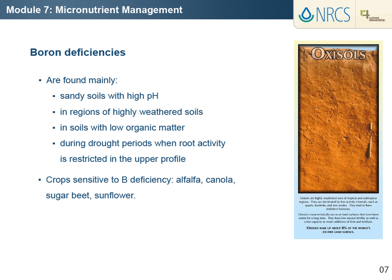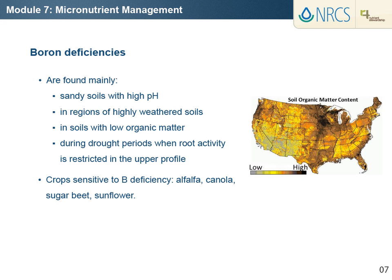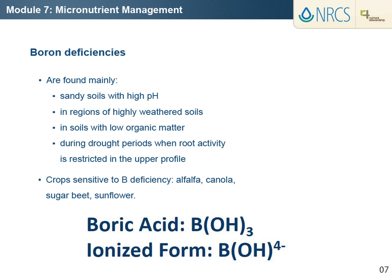Boron deficiencies are found mainly in sandy soils, in regions of highly weathered soils, low soil organic matter, exposed subsoil, and pH above 7.0. Organic matter contains much of the boron in soils. Boron is present in the soil solution mainly as the undissociated boric acid form or the ionized form at high pH values. These are the predominant boron forms taken up by plants. Plant available boron forms are somewhat mobile in soil and can be leached from the root zone, but they move less than other anions like nitrate or chloride. Sorption by clays and association with organic matter helps retain boron in soils. Boron deficiencies are more pronounced during drought periods when root activity is restricted in the upper profile where available boron is typically higher.